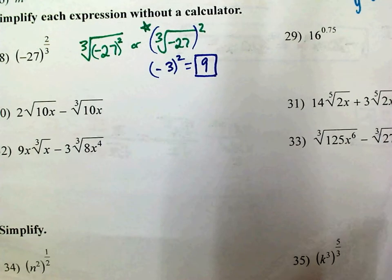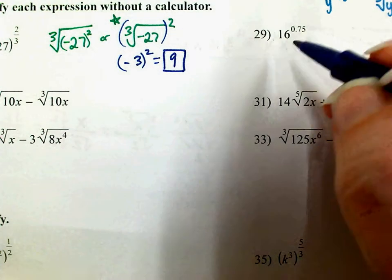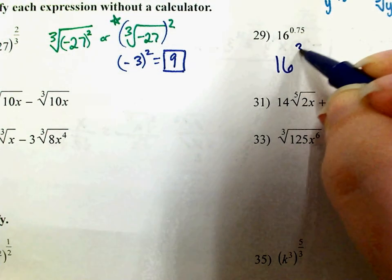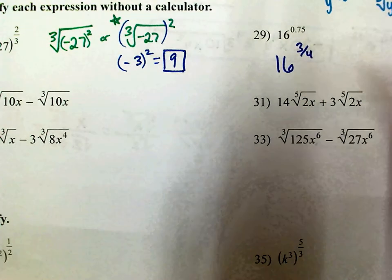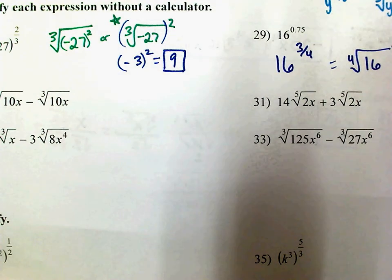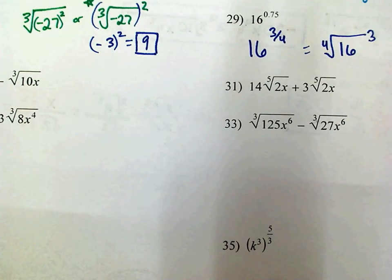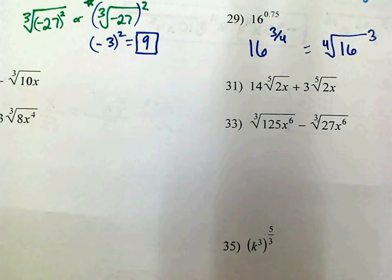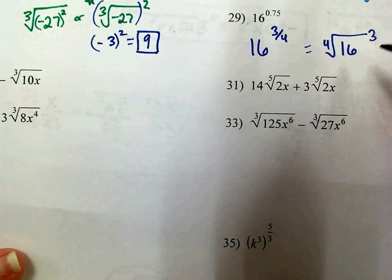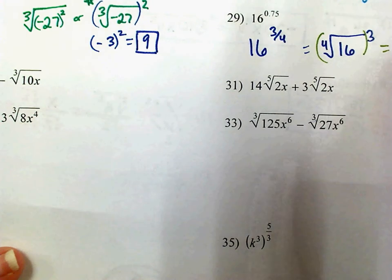On 29, it says 16 to the 0.75, which is 16 to the 3 fourths. So I know it's the 4th root of 16 to the 3rd power. I don't know what 16 to the 3rd is without a calculator, so I'm going to do the 4th root first and then raise it to the power of 3. 2 to the 4th is 16, so the 4th root of 16 is 2, and then my answer is 2 cubed, which is 8.